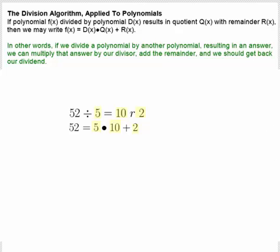This same algorithm applies to polynomials. For polynomials, if a polynomial f is divided by a polynomial d and it results in a quotient q with a remainder r, then we may rewrite f as d times q plus the remainder polynomial r. In other words, if we divide a polynomial by another polynomial, resulting in an answer, we can multiply that answer by our divisor, add the remainder, and we should get back our dividend, which would be our original polynomial.